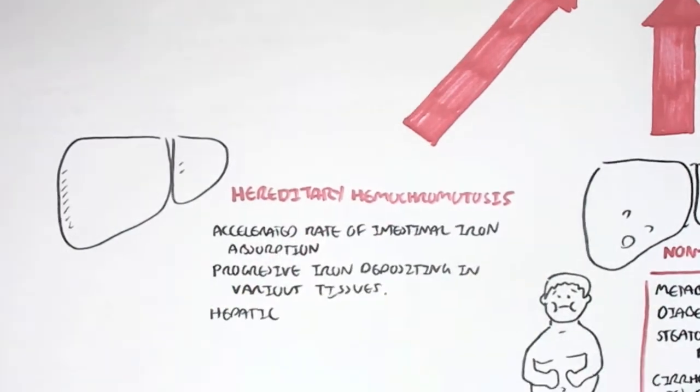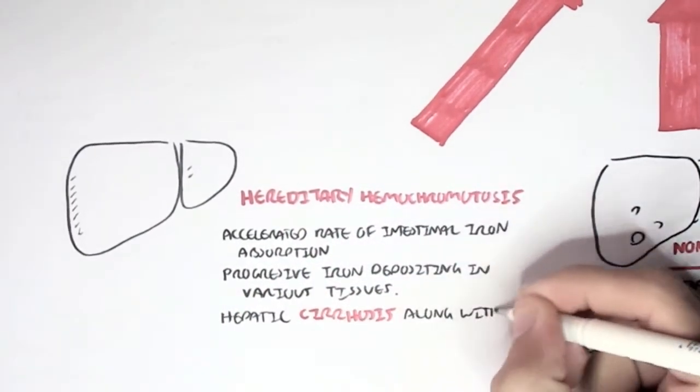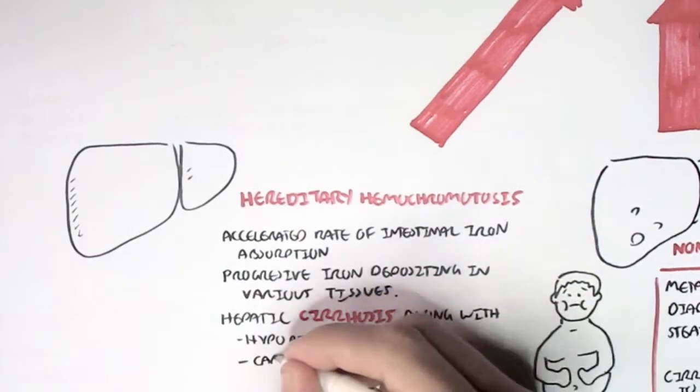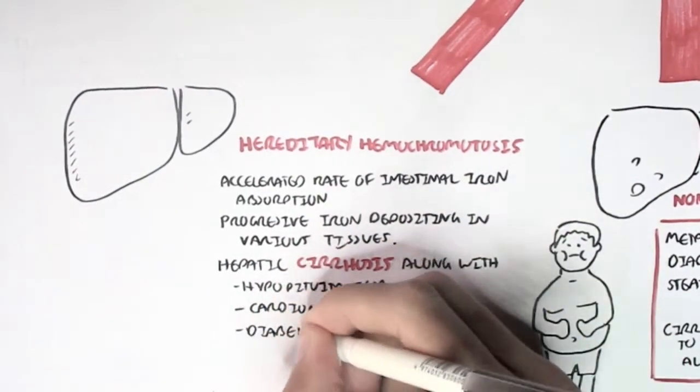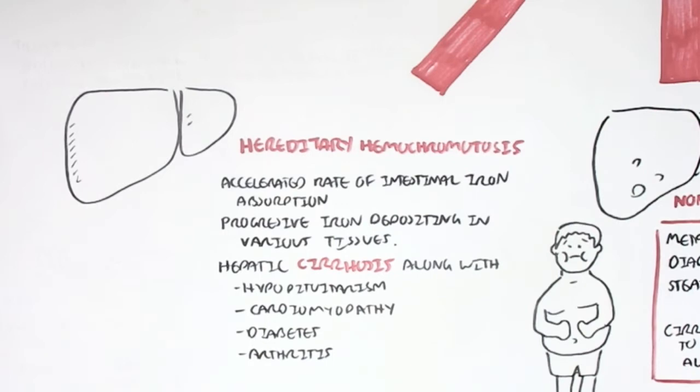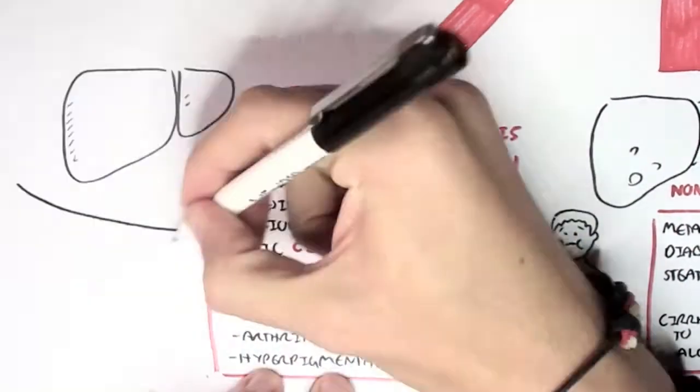Hereditary hemochromatosis can cause hepatic cirrhosis along with hypopituitarism, cardiomyopathy, diabetes, arthritis and hyperpigmentation.